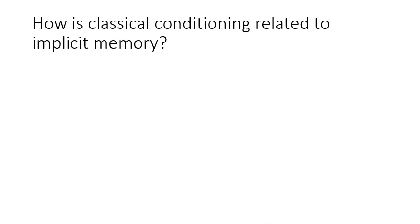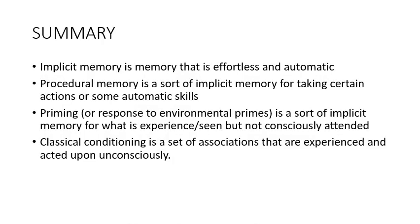So how is classical conditioning related to implicit memory? You're not consciously recalling the association between the buzzer and the puff of air — that eye-blink response is automatic. Sometime later, you still might respond to that buzzer with a blink. Since it's not effortful, that makes it implicit memory. To summarize, implicit memory is memory that's effortless and automatic, and we've covered three types: procedural memory, priming, and classical conditioning.